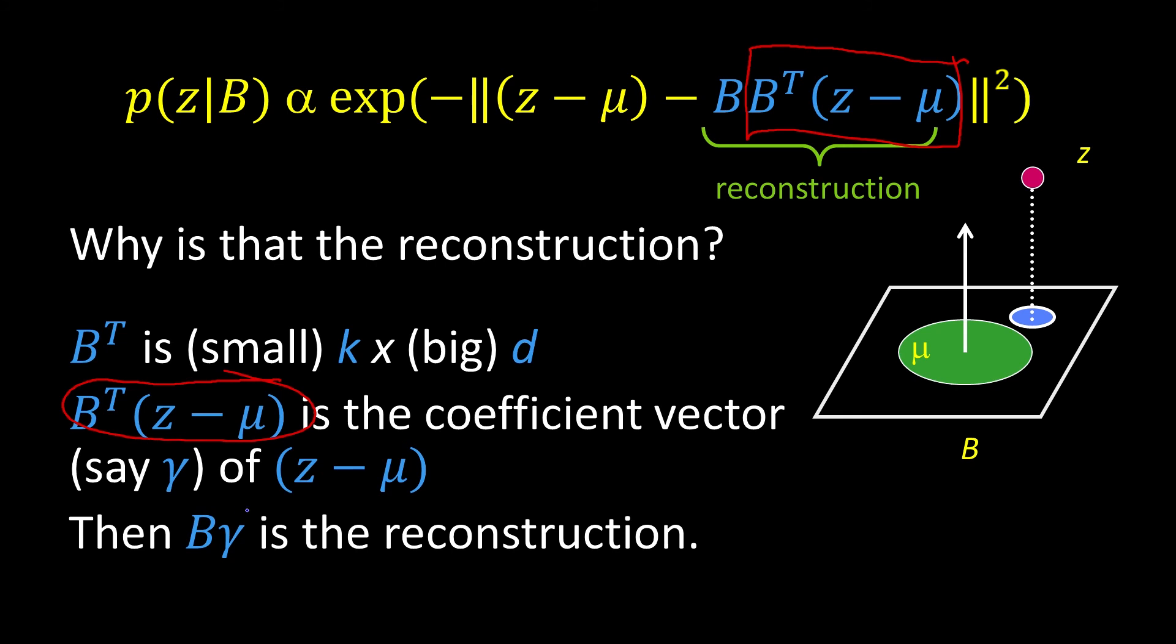I multiply B times the coefficient vector. That will be each coefficient times each of the eigenvectors summed up. So that's the reconstruction. So when I'm all done, this z minus mu, minus the total reconstruction, gives me just the amount that you're out of that plane, that you're out of the face space or the eigenspace. Another way of saying it is, that's how much of the signal you cannot reconstruct, using the vectors that are just in that basis set.